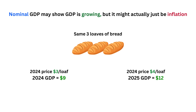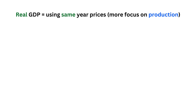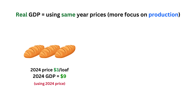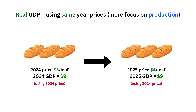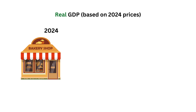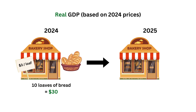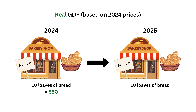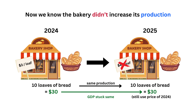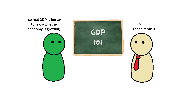That's where real GDP comes in. Instead of using the current price that keeps increasing due to inflation, real GDP uses a specific base year's price to calculate GDP. For example, using 2024 as the base year: in 2024, the bakery produces 10 loaves at $3, so GDP is $30. In 2025, the bakery still produces 10 loaves, but even though the price is now $4, we still count it at the 2024 price of $3 — so GDP stays at $30. This shows that production didn't actually increase, making real GDP more accurate.